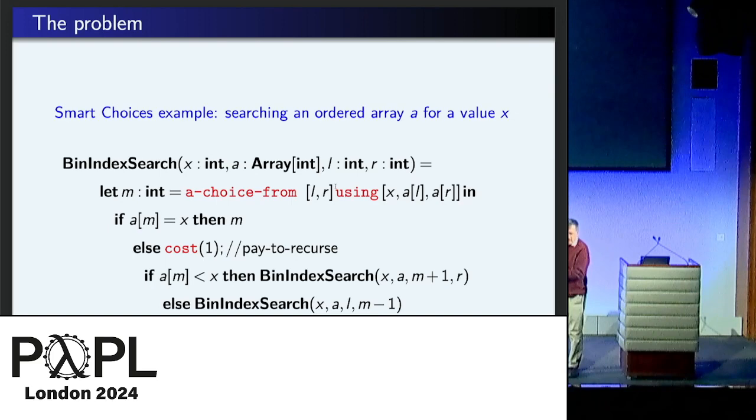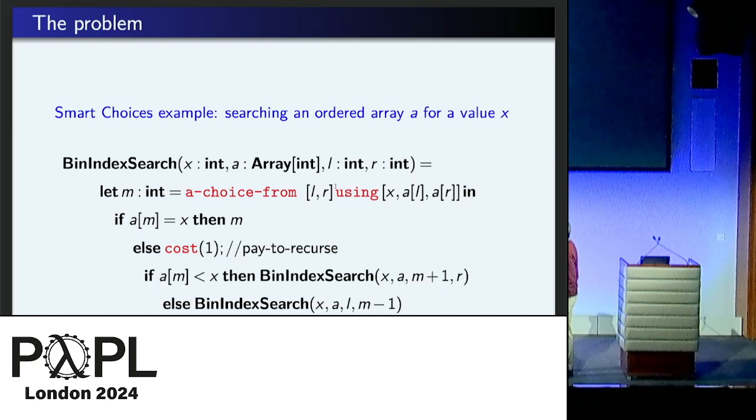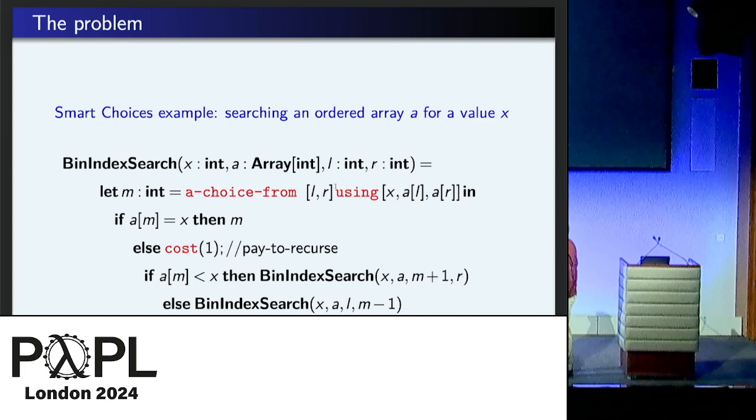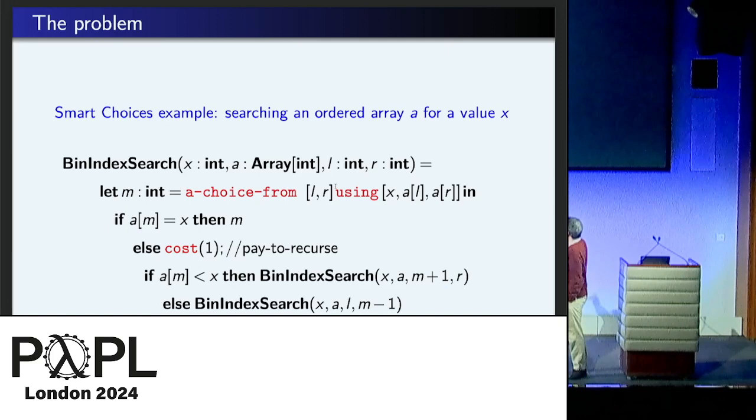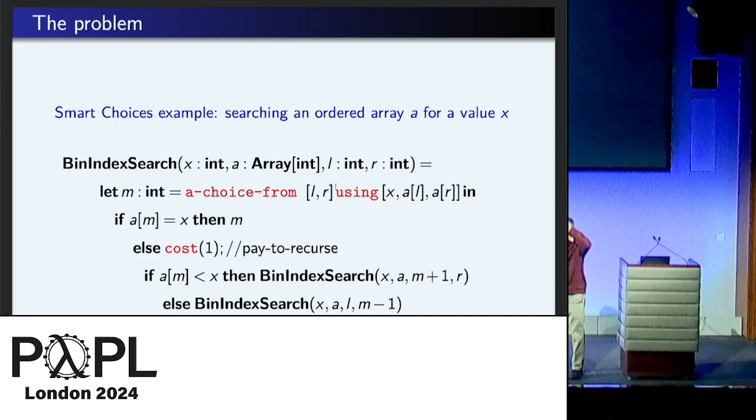What you do here is you say, I don't know what pivot to choose. I'm just going to ask some oracle. So if you ask this oracle, you say, please choose me a pivot from this range LR. And by the way, I'm trying to find x, and L the array has AL, and R the array has AR. So we give it some evidence, and it uses that and makes a choice.